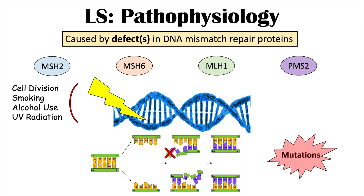The proteins affected in Lynch syndrome are MSH2, MSH6, MLH1, and PMS2. A way to remember them: there are two MSH proteins — MSH2 and MSH6 — and you can think of the S as an inverted two to help you remember there are two of them. MLH1 is another protein to remember, and PMS2 also has an S and a two in it.